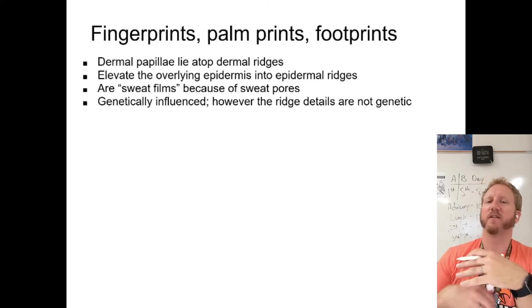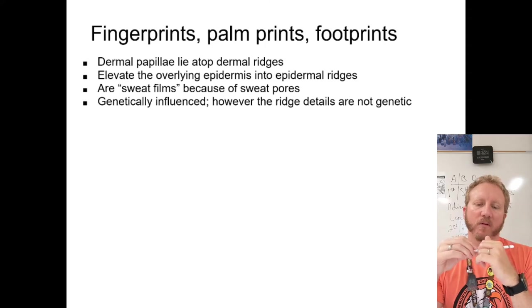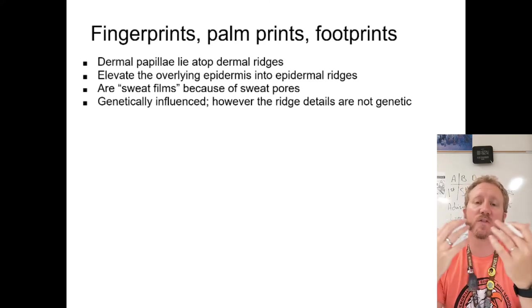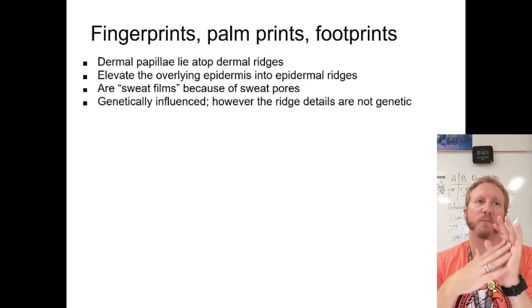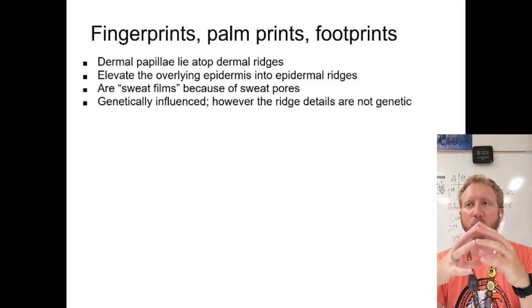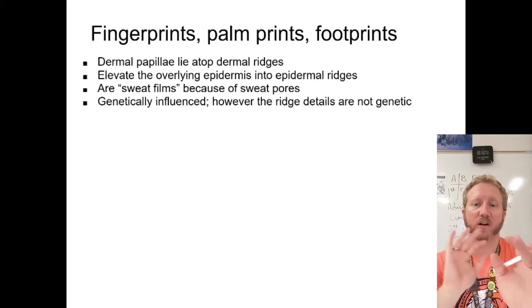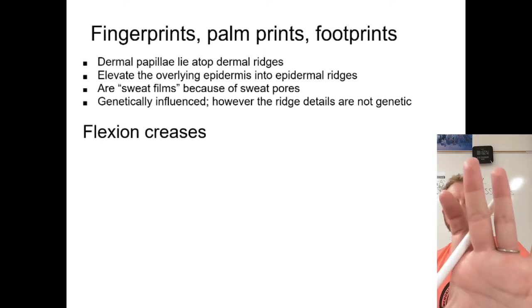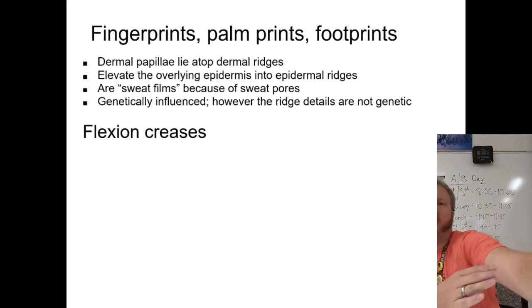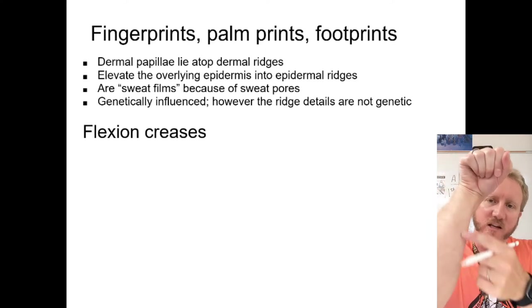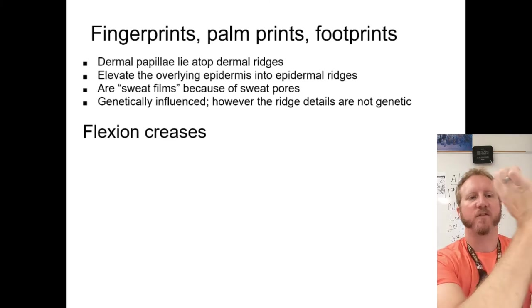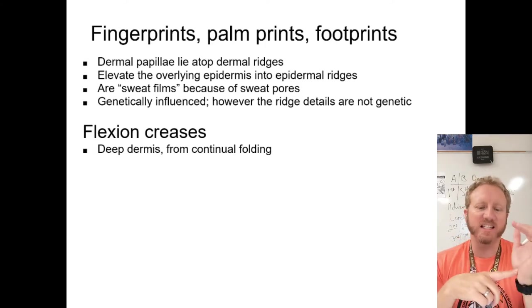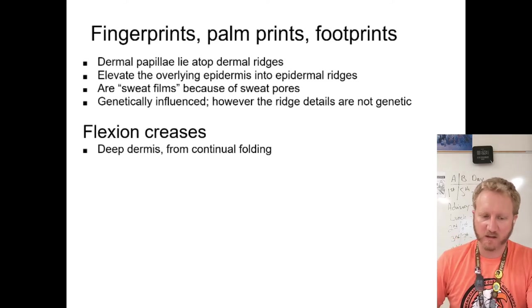Fingerprints also form sweat films from sweat pores. They're genetically influenced, but your adult fingerprints aren't solidified until the first few years of life, because they're shaped by the environment around you — especially in the womb. That's why identical twins can have different fingerprints. You can also have flexion creases — like those on the inside of your elbow, wrist, or fingers — which are permanent folds deep in the dermis that allow movement.